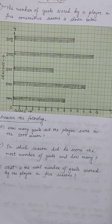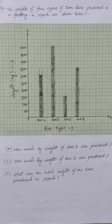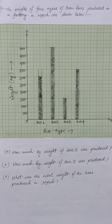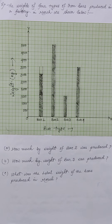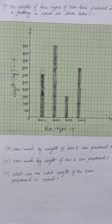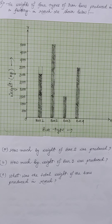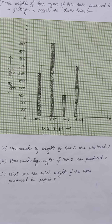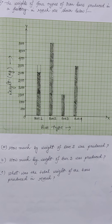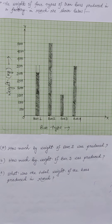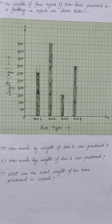Now come to the next question. Number two: the weight of four types of iron bars produced in a factory in March are shown below — the graph has been given. Question a: How much by weight of bar two was produced? Question b: How much by weight of bar three was produced? Question c: What was the total weight of the bars produced in March? Must do this homework in your copy.